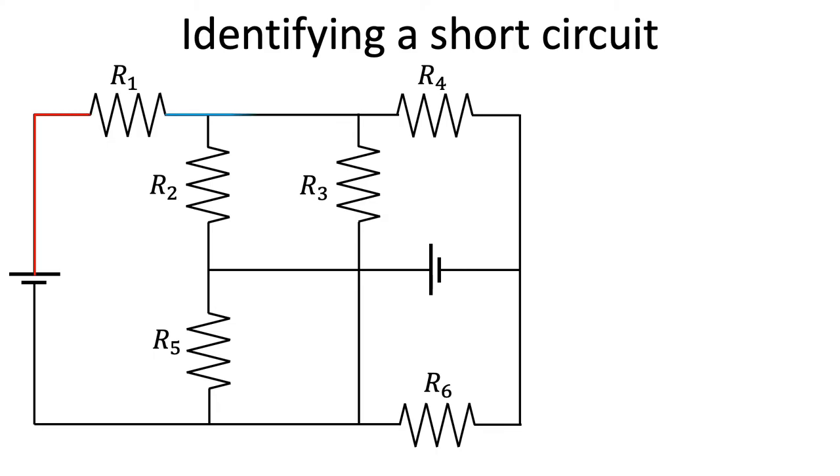Notice that we keep using the same color even if there are junctions. We repeat this procedure until all the wire segments have colors, making sure that we don't use the same color more than once.